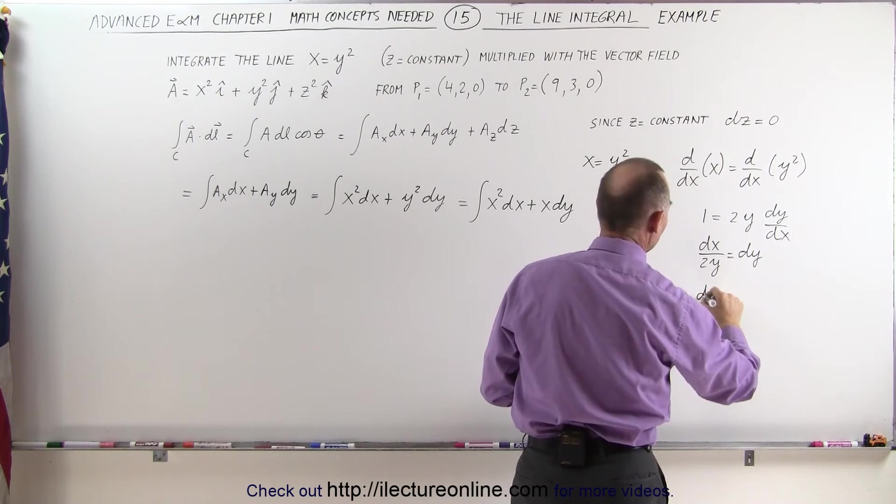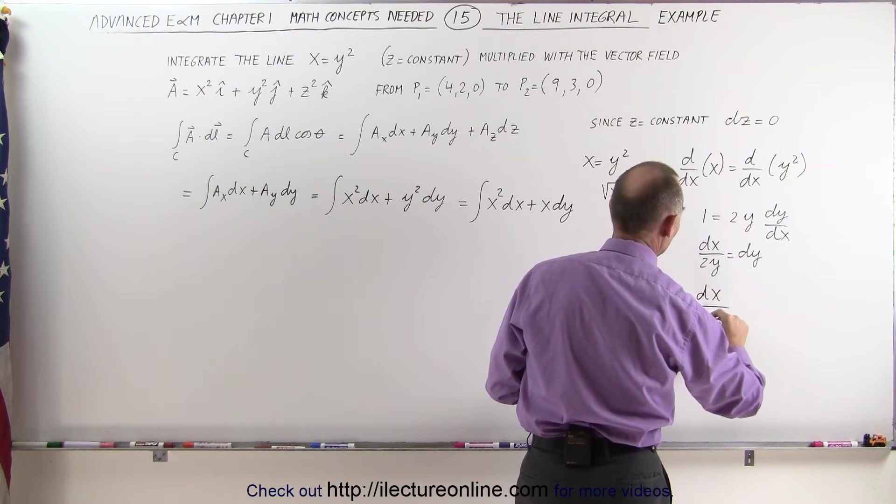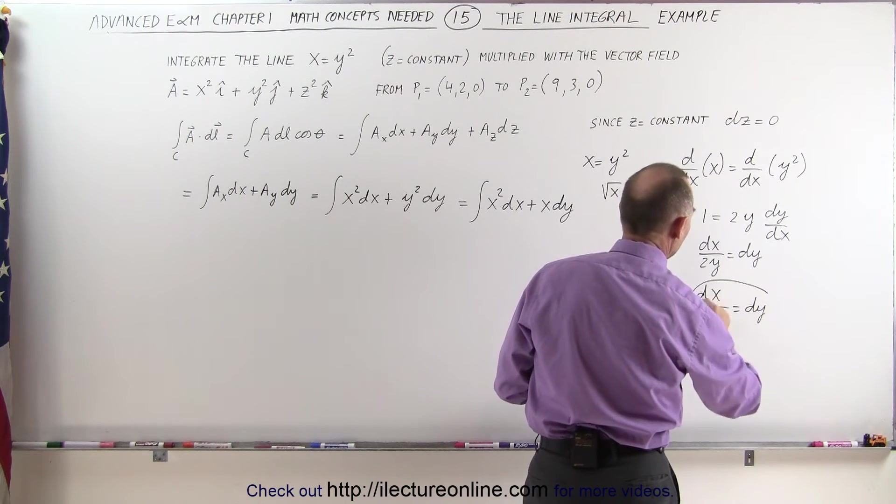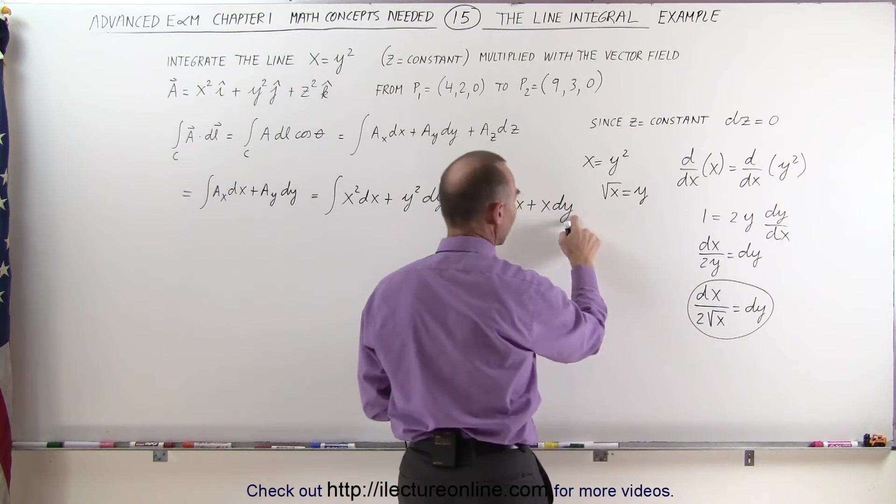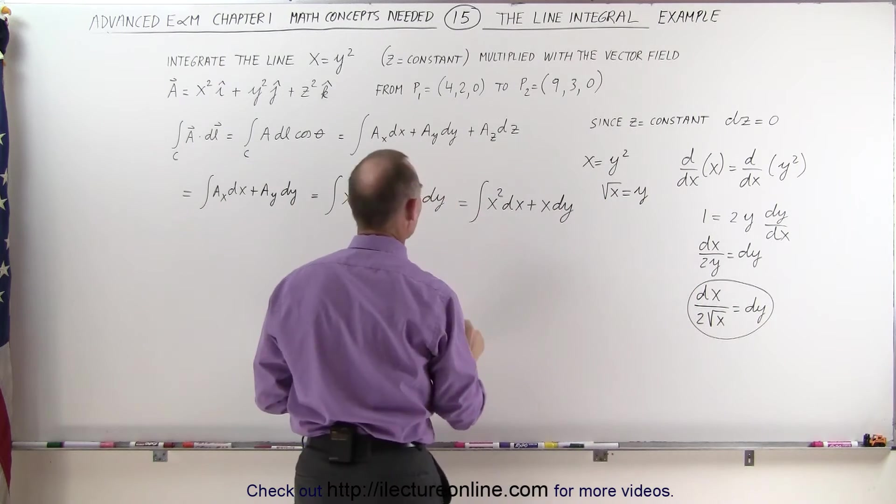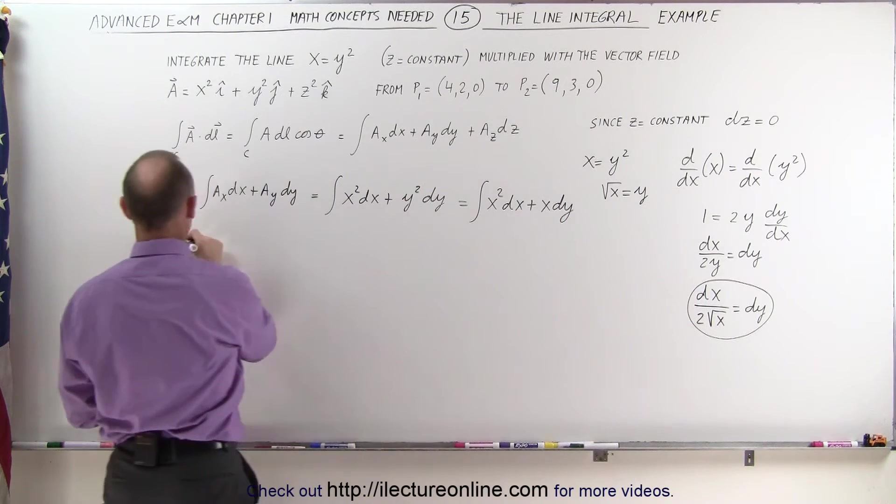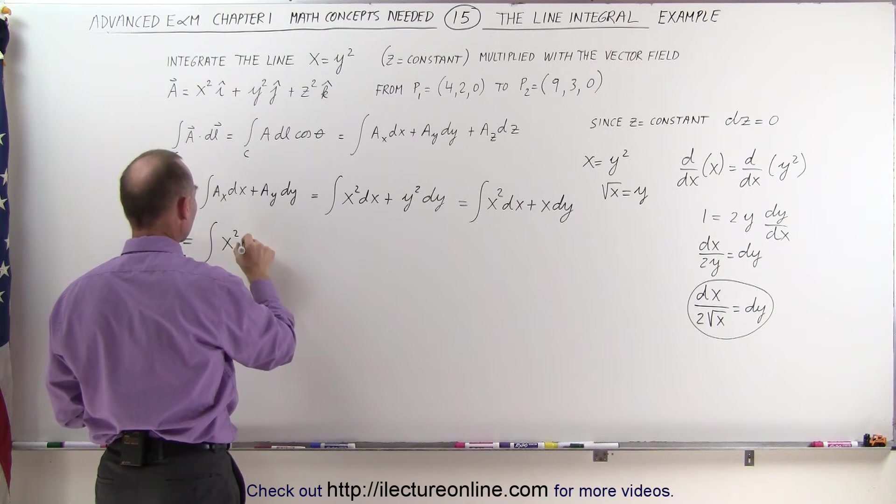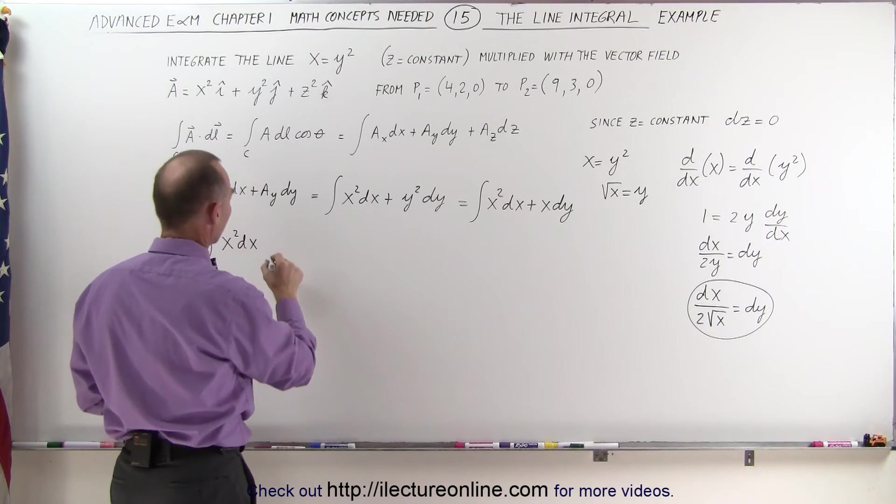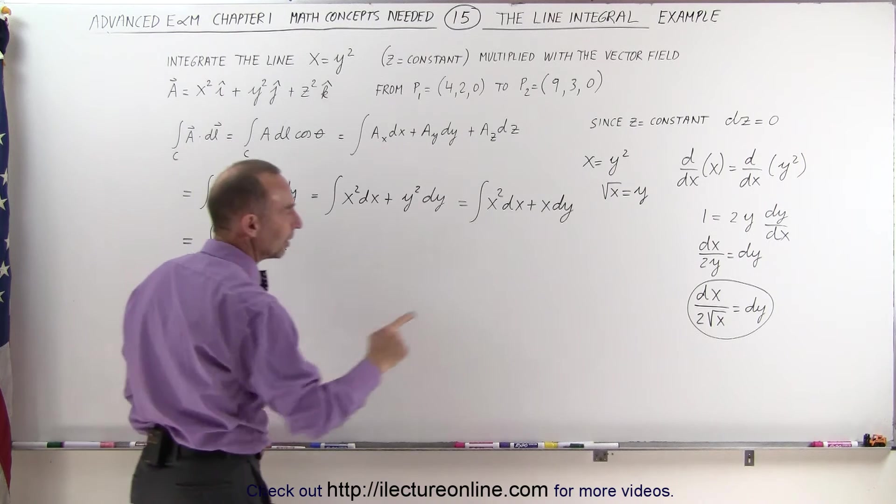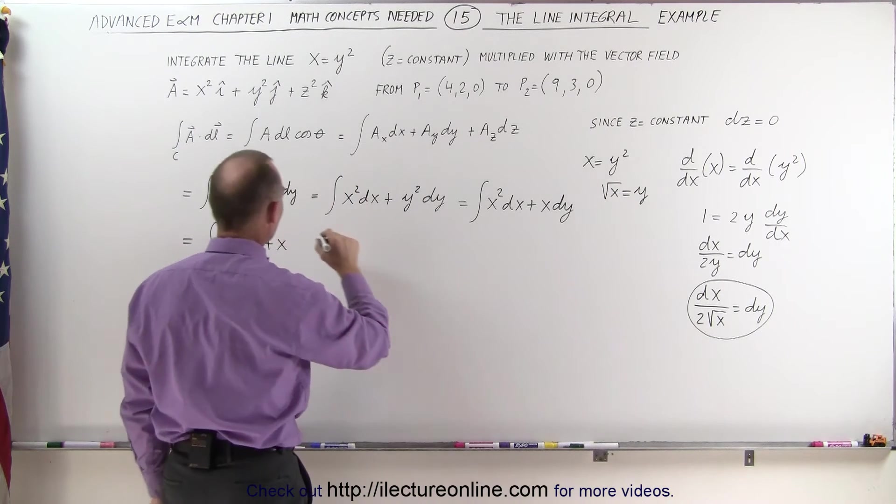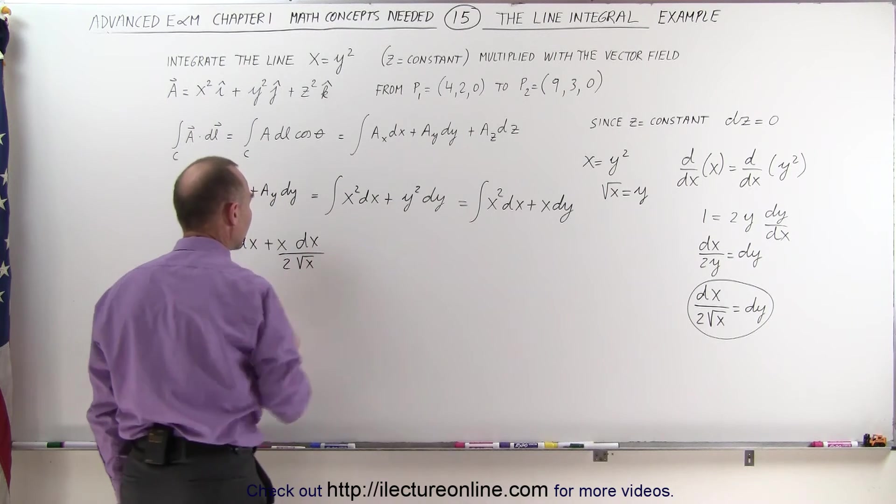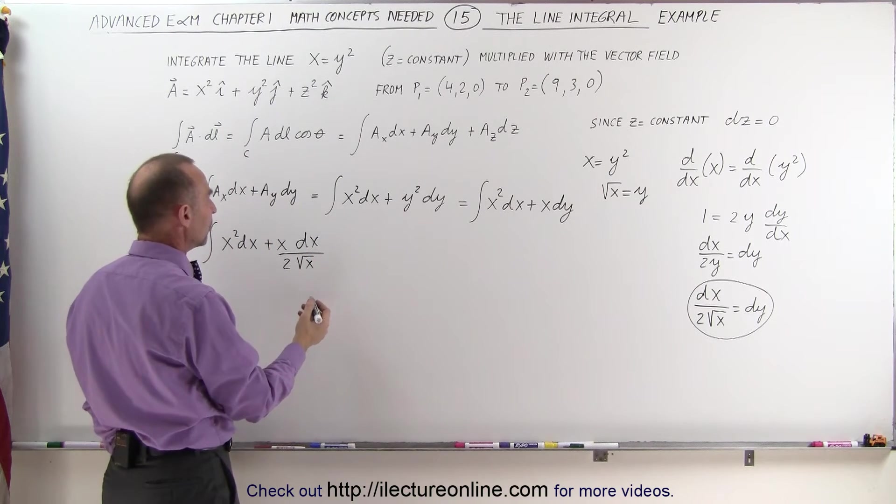So finally we can say that the x divided by 2 times the square root of x is equal to dy, so now we can make the substitution. Instead of writing dy, we can write this. Again, this is now equal to the integral of x squared dx plus x times dy, which can now be written as dx divided by 2 times the square root of x.